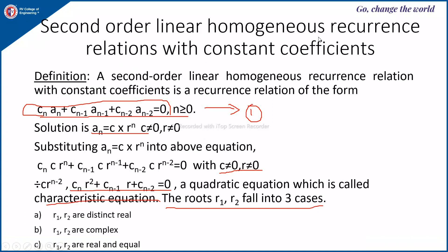Now let us see the second order linear homogeneous recurrence relations with constant coefficients. The form is Cn·An + Cn-1·An-1 + Cn-2·An-2 = 0, for n ≥ 0. The solution is An = C·r^n where C ≠ 0 and r ≠ 0. By substituting An = C·r^n into the recurrence relation, factoring out the common term C·r^(n-2), we get the characteristic equation Cn·r² + Cn-1·r + Cn-2 = 0, which is a quadratic equation.